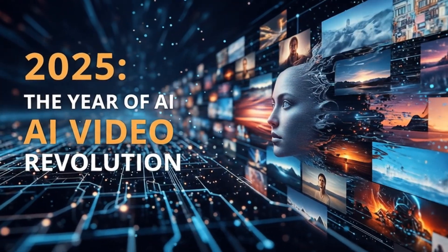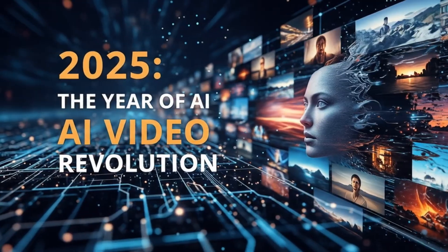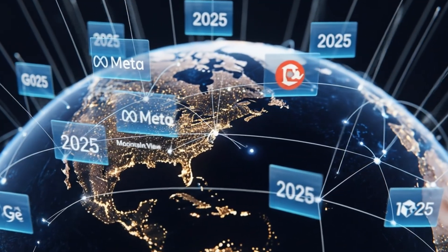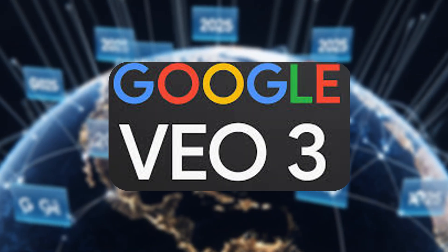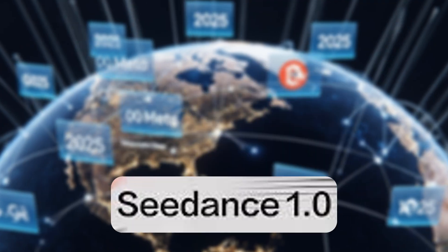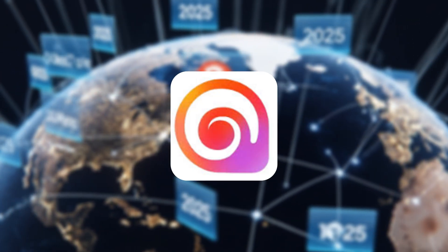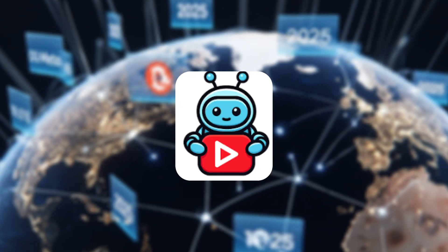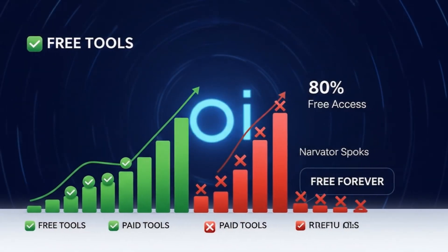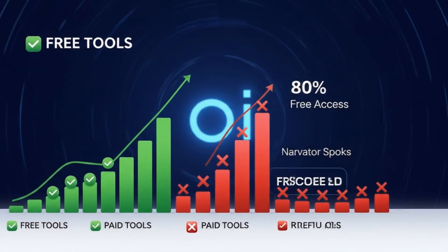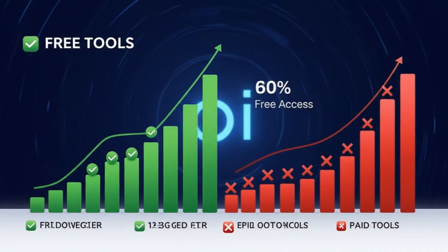This year has been a year of massive AI video generator tools. Almost all the AI giants released their AI video generator tools this year, like Google VO 2 and 3, Sora's AI tool, Kling 2.0, Hyluo Zero Two Model, AI Tube, and many more. The majority of these companies make their tools available for free to create unlimited videos, just like the tool I am about to show you.